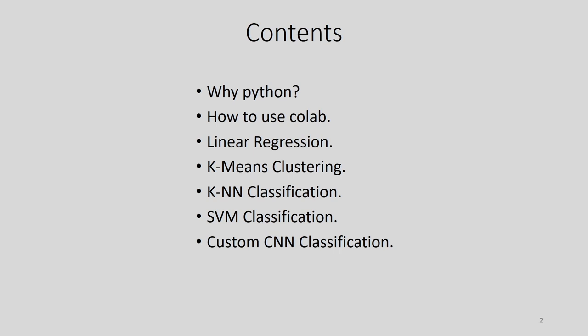This is going to be the content of today's lecture. First we will be talking about why we are using Python as the environment for programming these machine learning and deep learning algorithms. Then we will talk about the use of Colab, which is basically used for accessing the free GPUs provided by Google. After that, I am showing the practical implementation of four machine learning algorithms: linear regression, k-means clustering, KNN classification and SVM classification. And after that, I will show the custom CNN classification algorithm.